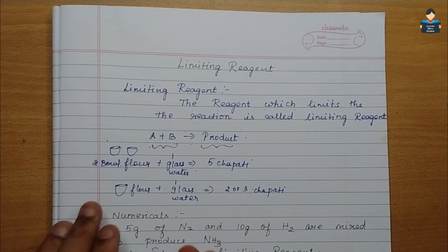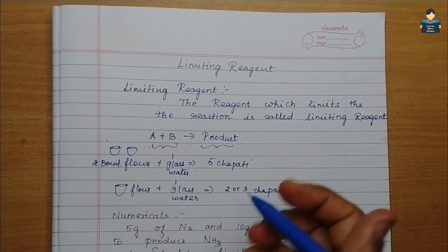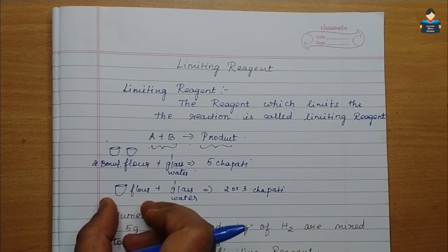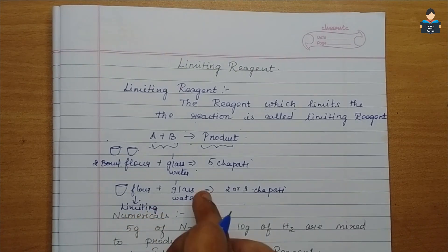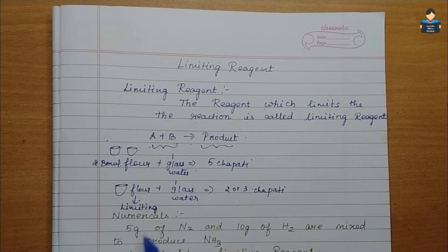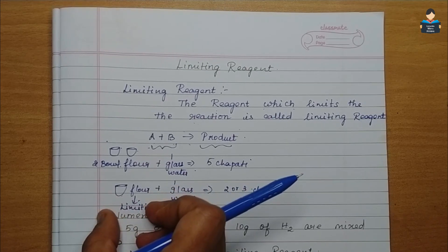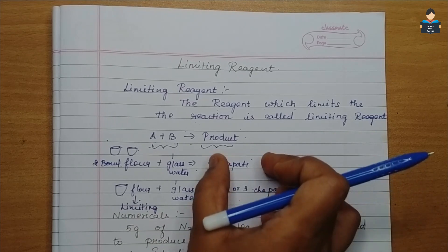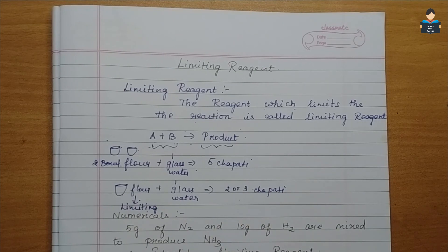So what is limiting you? Which is stopping you from making five chapatis? It is the one glass of water. But the floor — the flour — is in excess. So water is the limiting reagent here. That's how the concept of limiting reagent applies to a chemical equation as well.